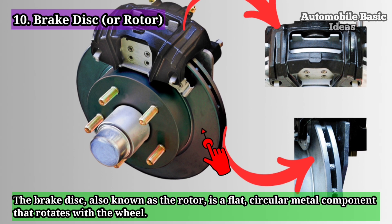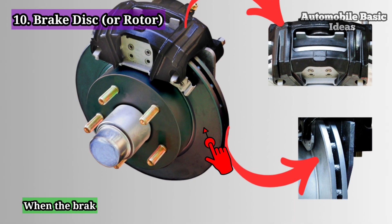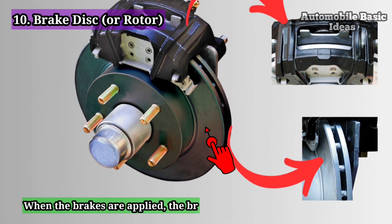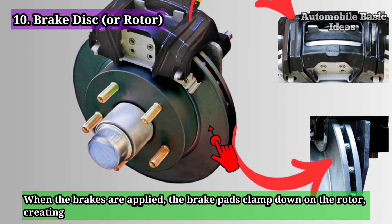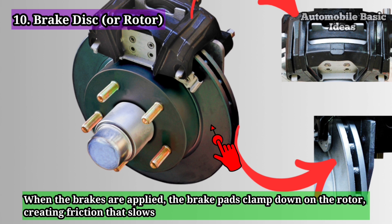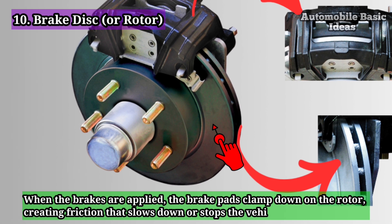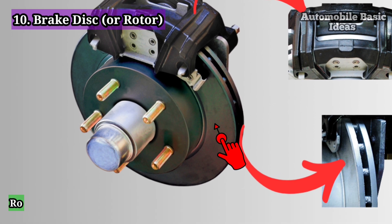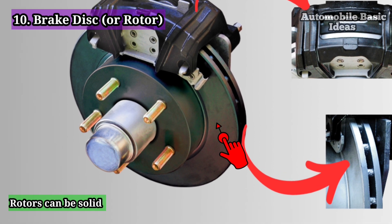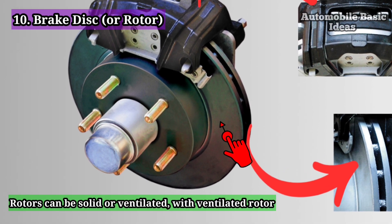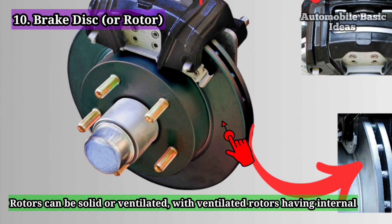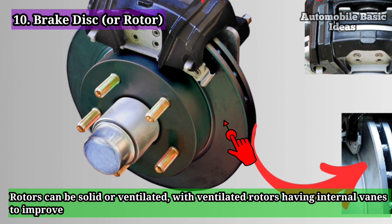When the brakes are applied, the brake pads clamp down on the rotor, creating friction that slows down or stops the vehicle. Rotors can be solid or ventilated, with ventilated rotors having internal veins to improve heat dissipation.